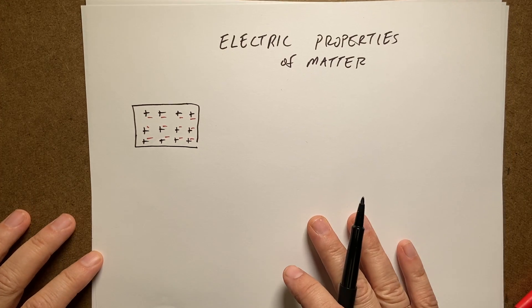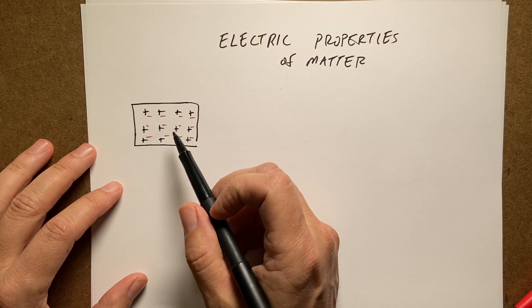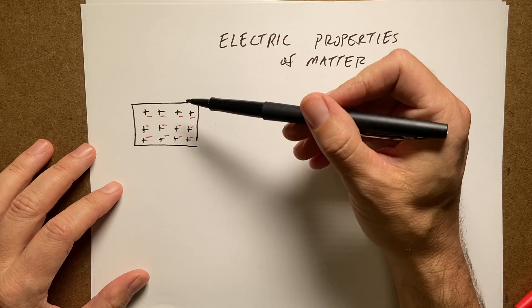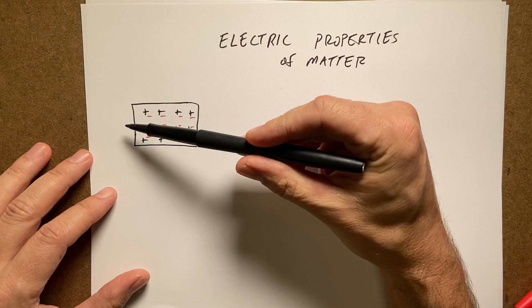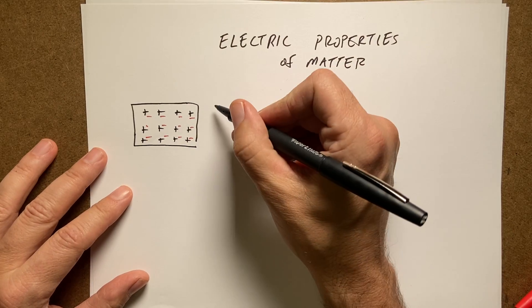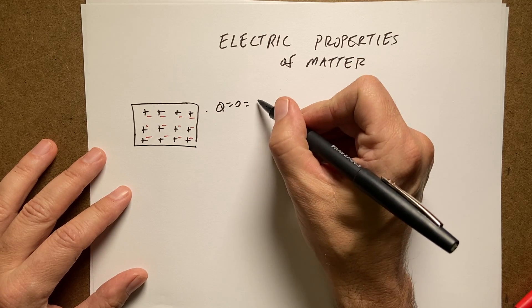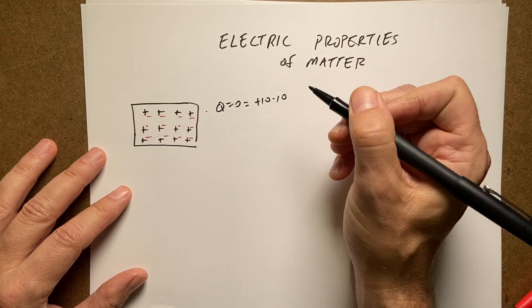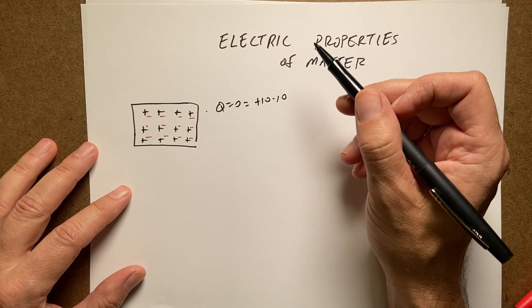Let's start with our very basic model of an object. Let's say this is a piece of aluminum or something like that. It has both positives and negatives in there. If the total number of positives is equal to the number of negatives, then it would be neutral. So we'd say q equals zero, but it could really be like plus 10 minus 10, and that's equal to zero. So it does have charges in there even though it's neutral. That's an important point.